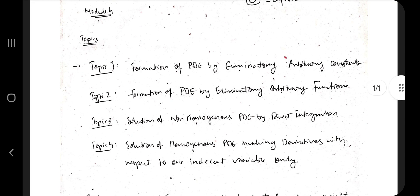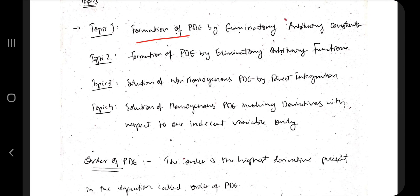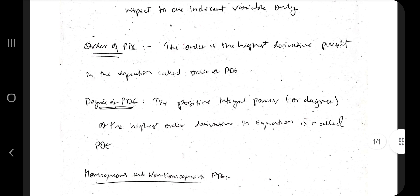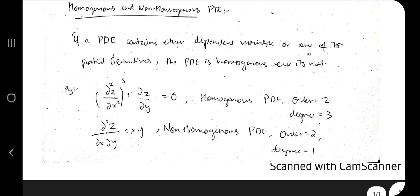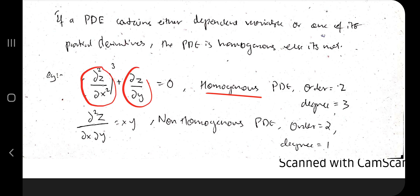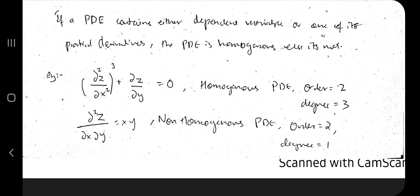The first topic is formation of PDE by eliminating arbitrary constants. Before that, you need to know what is the order of a PDE, what is the degree, and what is homogeneous versus non-homogeneous PDE. Homogeneous means there should be only one variable at a time — it can be either x or y or z, but not x and y together. That would be non-homogeneous.